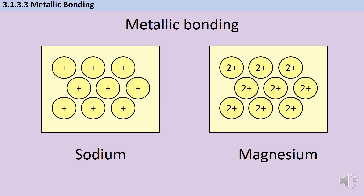So if we take sodium and magnesium as an example, these are both elements in period 3, which means that they have the same number of shells. You might think that that would mean that the ions were the same size, but actually the magnesium ion is going to be ever so slightly smaller. Magnesium has 12 protons compared to sodium's 11, and that increased nuclear charge is going to mean that the outer shell electrons are pulled in ever so slightly closer. So a magnesium ion has a smaller radius than a sodium ion.